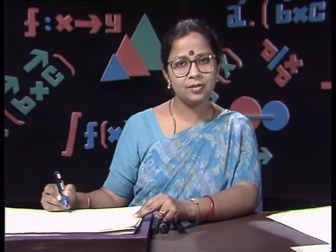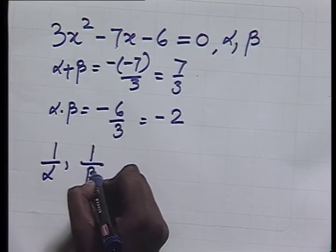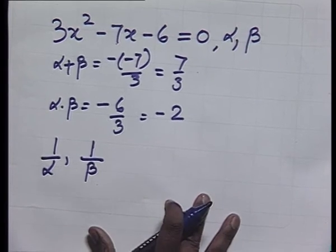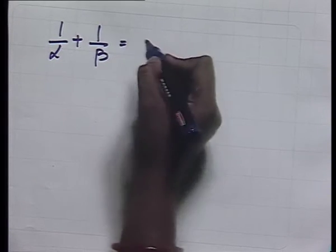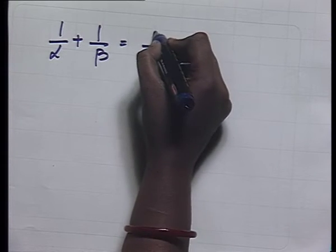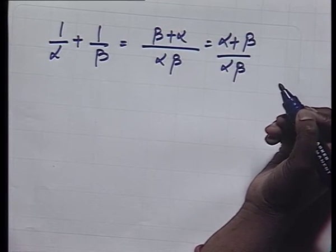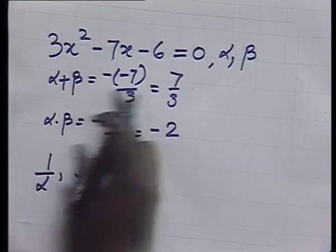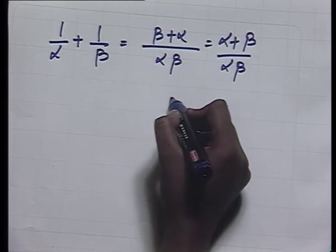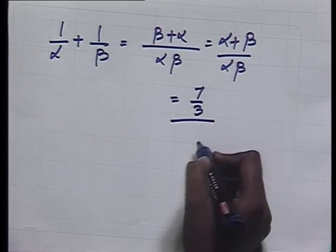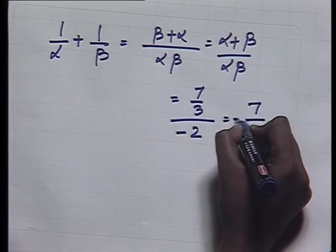The roots of the required equation will be 1/α and 1/β, since they are reciprocals of the roots of the given equation. The sum of roots of the required equation is 1/α + 1/β = (α + β)/(α·β) = (7/3)/(-2) = -7/6.